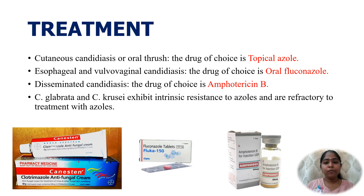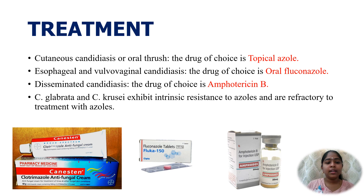The treatment for candidiasis depends on the type. Topical azoles are used in cutaneous candidiasis or oral thrush. Oral fluconazole is used in esophageal and vulvovaginal candidiasis. Amphotericin B is used in disseminated candidiasis.